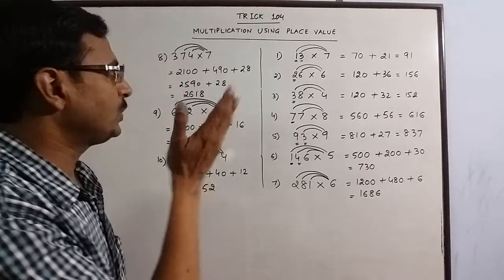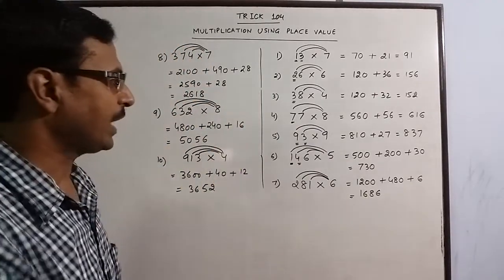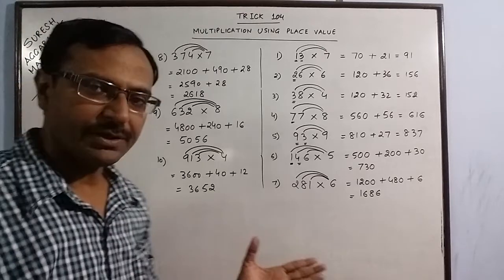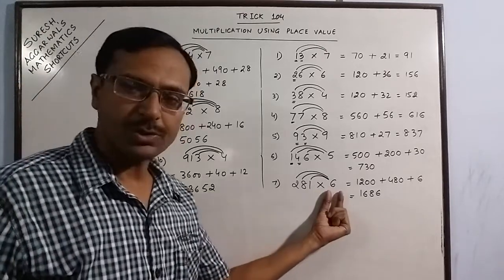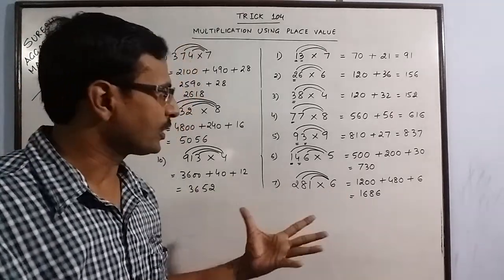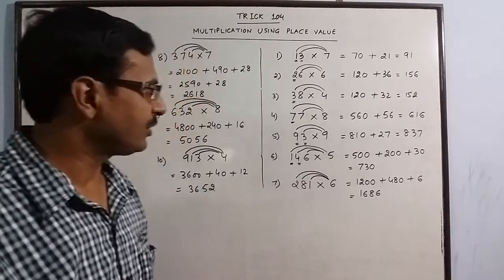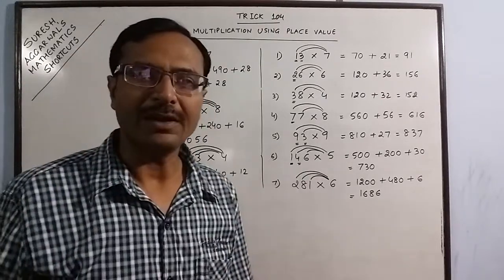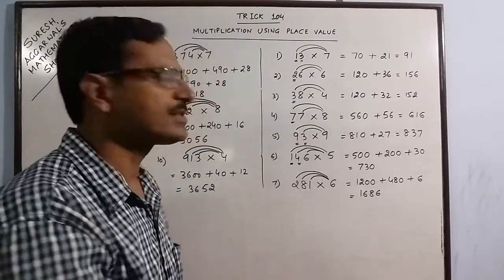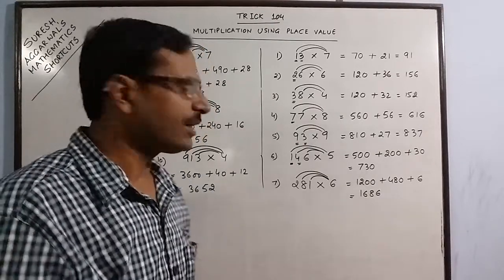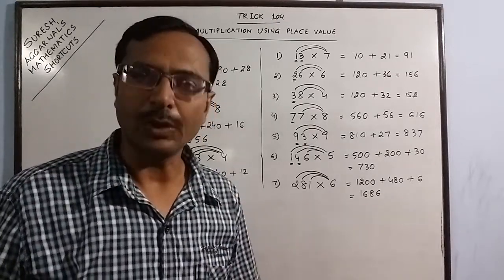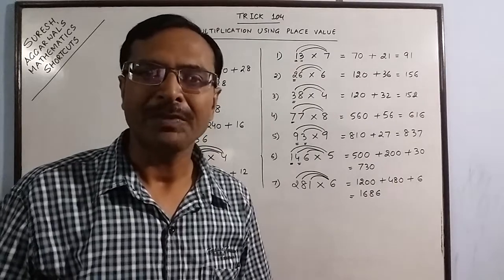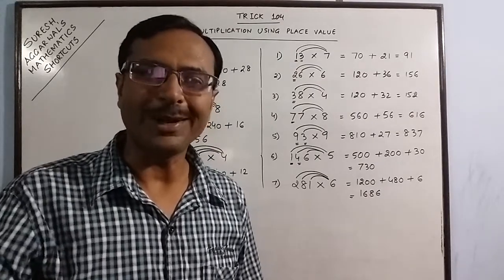So using place value, you can find a lot of such products. You can extend this method to 2 digit numbers here also and find the products yourself. I will give that to you for practice. Through this practice, you can master this concept and come out with saving a lot of time in competitive exams during multiplications. So keep learning and share and subscribe the channel if you like it.